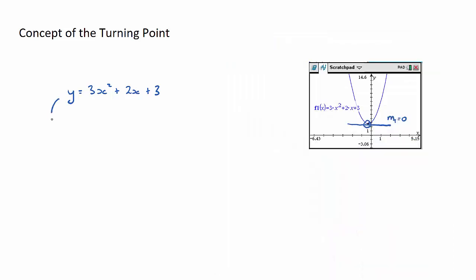Let's now derive this equation — we did this in the previous video so I'll do it quickly. y dash equals 6x plus 2. Now as I talked about in the previous video, if I was to put in the x value at a particular point — in that video we did x equals 1 — it gives me the gradient of the tangent. Whereas for this particular scenario I know the gradient of the tangent: it's 0.